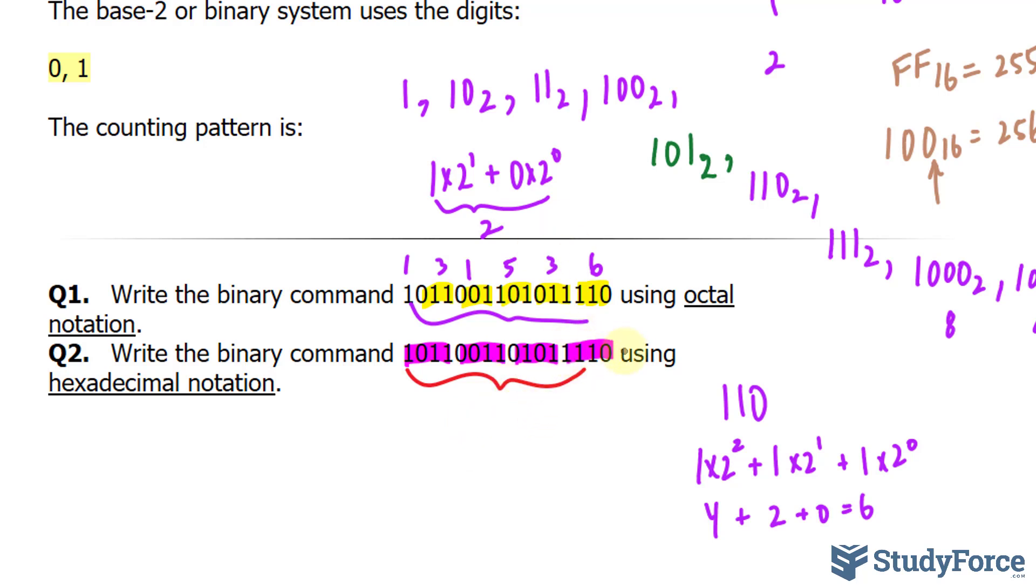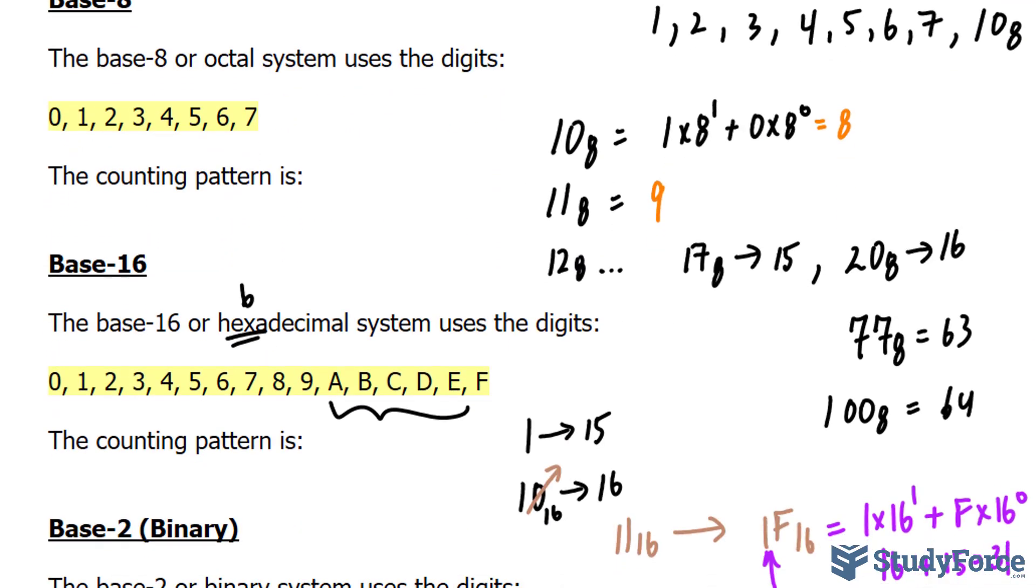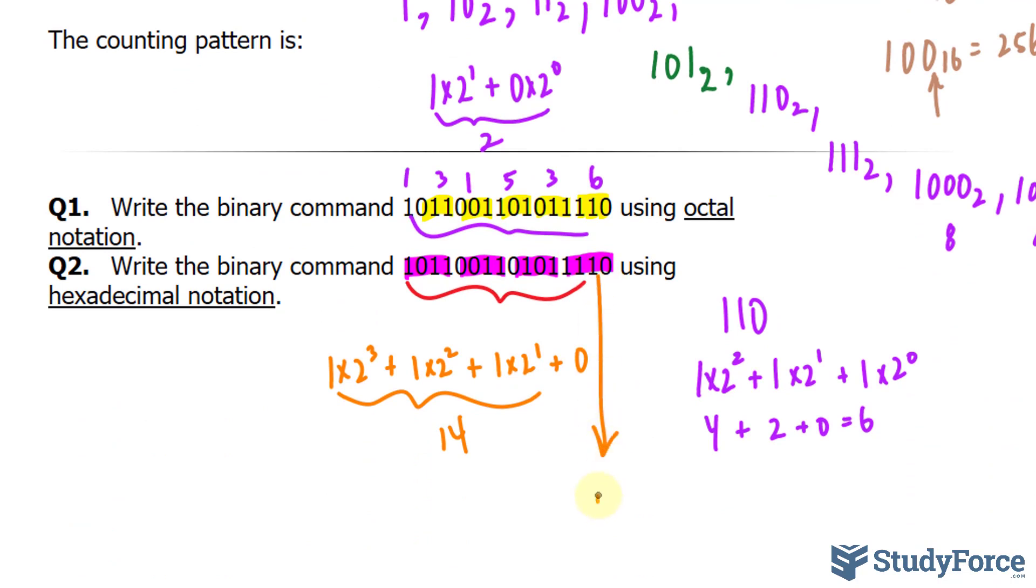So 1, 1, 1, 0, 1 times 2 to the power of 3 plus 1 times 2 to the power of 2 plus 1 times 2 to the power of 1 plus 0, essentially. This adds up to 14. Now remember, 14 is the letter e. So this is e.